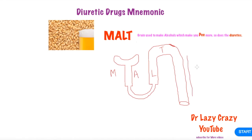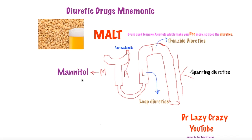Our first letter, M, stands for Mannitol. These drugs basically work on the proximal convoluted tubules, and they make things move faster — M for Mannitol, M for move faster.